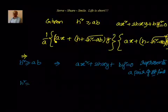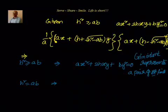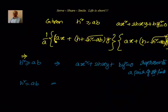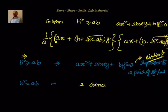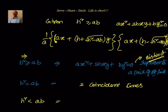When H² = AB, the two lines are coincident — they represent a pair of coincident straight lines. When H² > AB, the equation represents two distinct lines. When H² < AB, then H² − AB < 0, the square root is imaginary, and we get two imaginary lines.